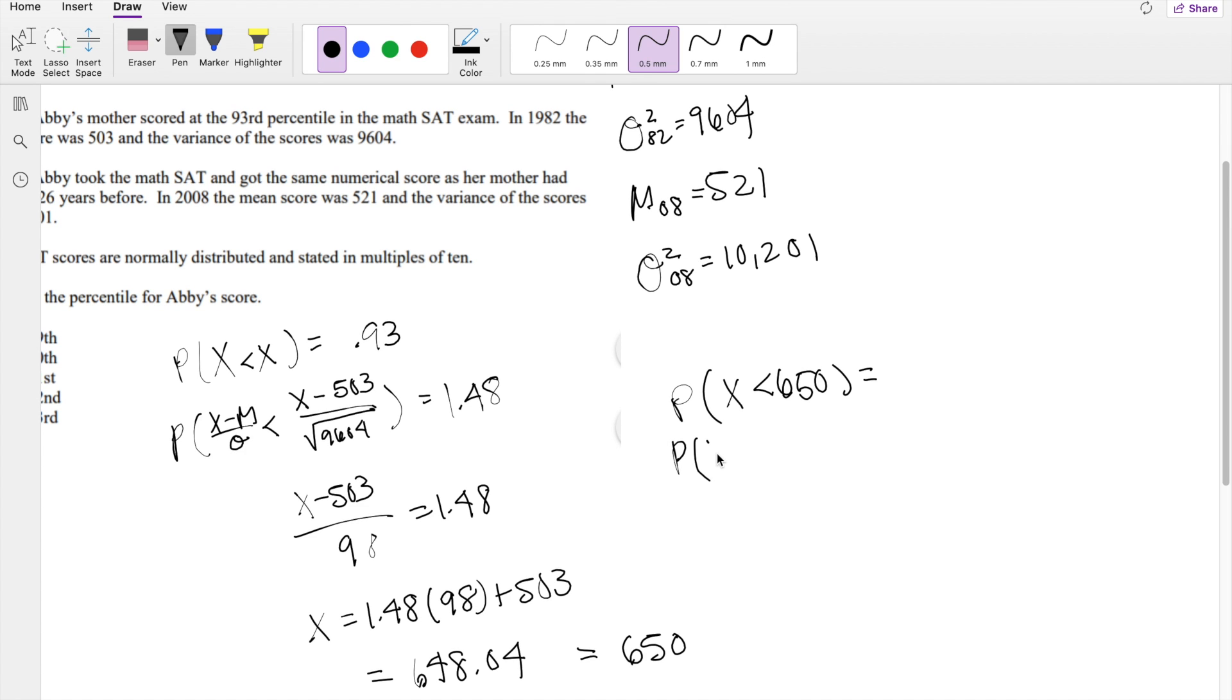So let's normalize it. x minus mean over standard deviation is less than 650 minus mean, which we know is 521, divided by standard deviation, which is square root of 10,201. So that's 101, is equal to question mark.